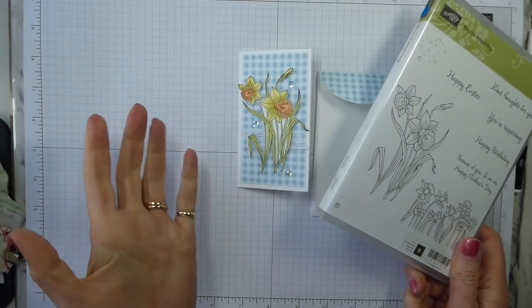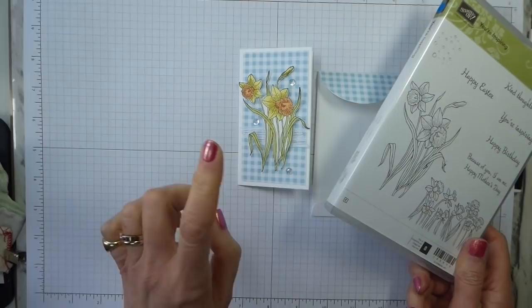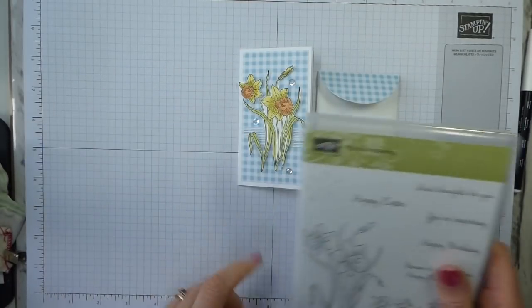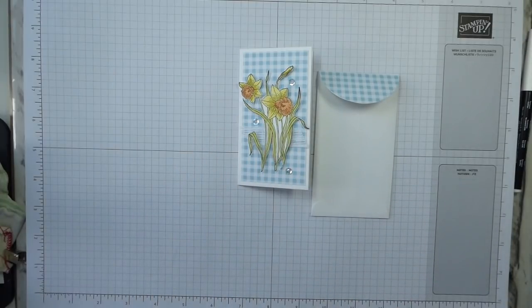Now obviously if you just wanted to do quick cards you could stamp on the front of the card direct and then use stamping write markers, not blends, because blends obviously will bleed. I say obviously, blends will bleed, whether it is obvious or not. I shouldn't assume that you know that blends will bleed through to the back of the card.